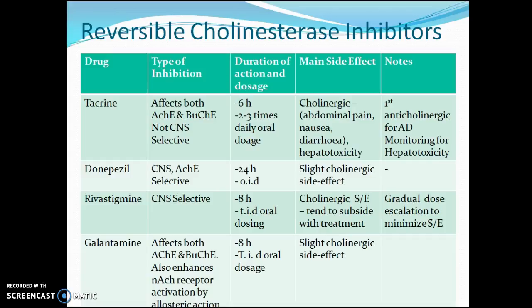Tacrine is the first anticholinesterase drug that came into therapy for Alzheimer's disease. Rivastigmine is a drug for which we need to increase the dose gradually to minimize side effects.